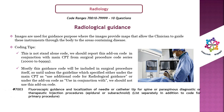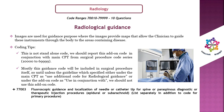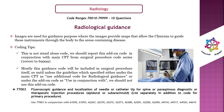Code 77003 = fluoroscopic guidance and localization of needle or catheter tip for spine or paraspinous diagnostic or therapeutic injection procedures (epidural or subarachnoid) — list separately in addition to the primary procedure code. 77003 should only be used in conjunction with codes such as 61050, 61055, 62267, 62270, and so on. Do not report 77003 in conjunction with 62320, 62321, 62322, 62323, 62324, 62325, 62326, or 62327.